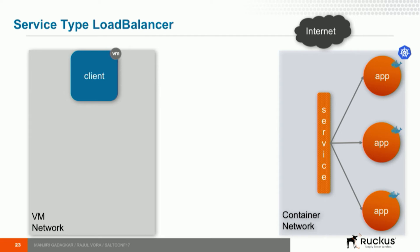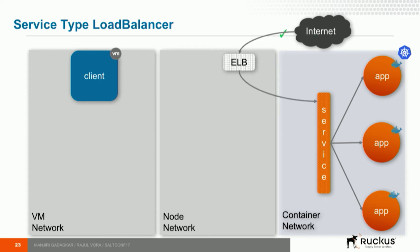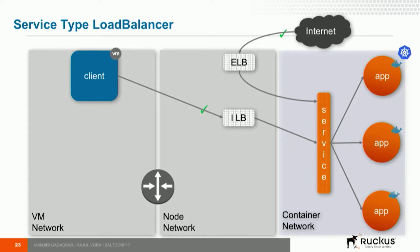Things look better with the LoadBalancer service type. With that, you get an external load balancer from the underlying cloud platform, which enables access from the internet — but again that's not our problem statement. We are looking for access from the virtual machines. If we use the internal annotation for the same service type, we get an internal load balancer with an IP address in the node network. As long as the two networks are connected, the client can now get access to the ILB IP address, and we've essentially solved our accessibility problem.